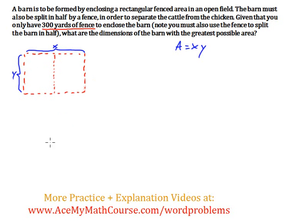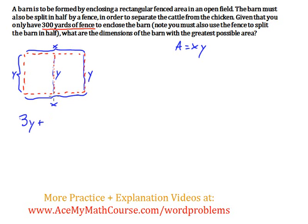But we know that we only have 300 yards of fence. Where are we going to need to use the fence? Well, over here x, and x again over here — a total of y over there, and y again. So we have three y's. So 3y plus 2x must equal 300. And of course we want to use all the fence because we want to maximize the area of the barn.